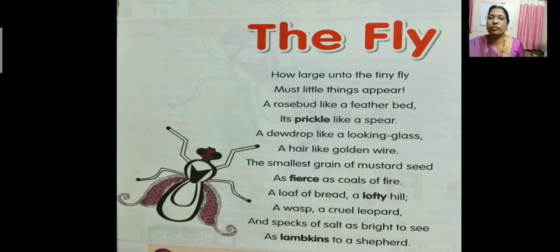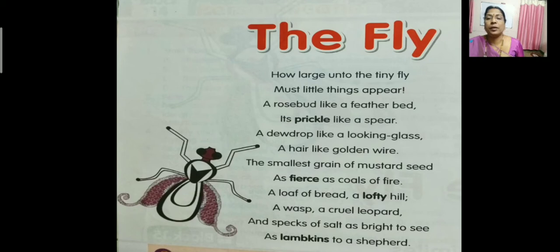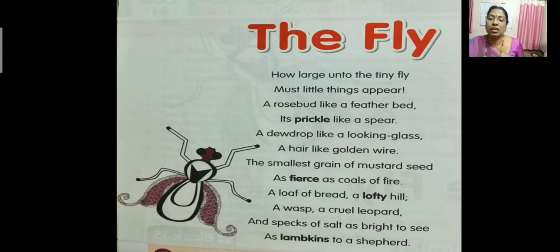Again I will read the poem. Put your finger on the text and you can repeat after me or read along with me. 'How large unto the tiny fly must little things appear. A rose bud like a feather bed, its prickle like a spear. A dew drop like a looking glass, a hair like golden wire. The smallest grain of mustard seed as fierce as coals of fire. A loaf of bread, a lofty hill, a wasp, a cruel leopard. And specks of salt as bright to see as lambkins to a shepherd.'